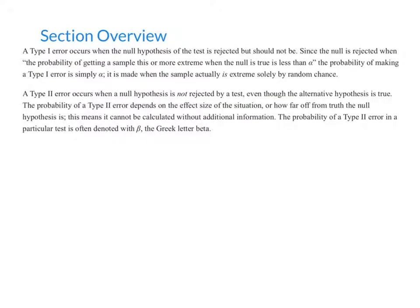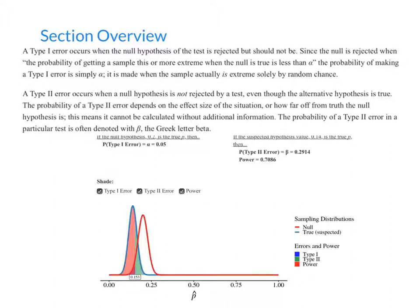Students will now formalize the two types of sampling error first seen in Section 8.1 and calculate the power of a test under specified conditions.